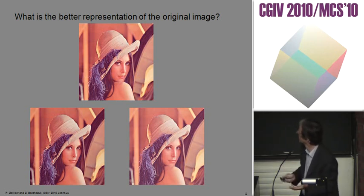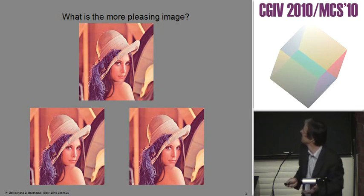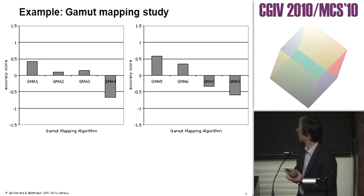Typically for gamut mapping, the question is what is the better representation of an original image. We could also think of other tests: what is the more pleasing image if you want to improve the smile of people for a camera maker, for example.